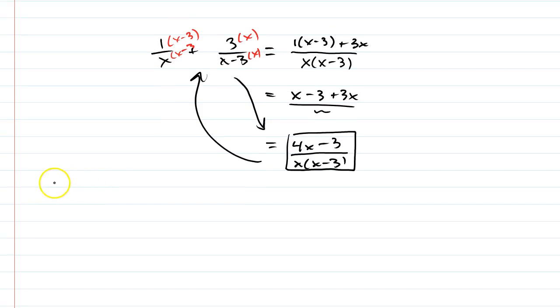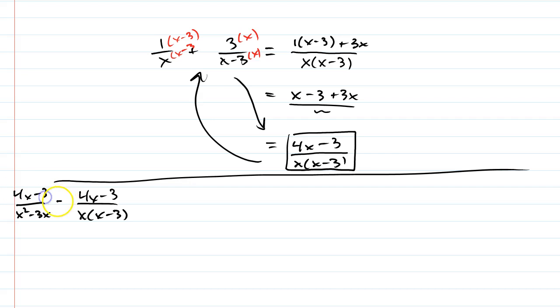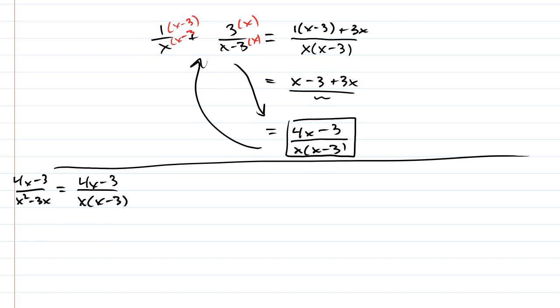Anyway, let's actually show how this would work in this problem. They would give you 4x minus 3 all over x times x minus 3, or they might not even do that. They may be giving you x squared minus 3x, and you would know that you have to factor the bottom first. And then you'll notice in this problem, the factors of the bottom are your possible denominators.